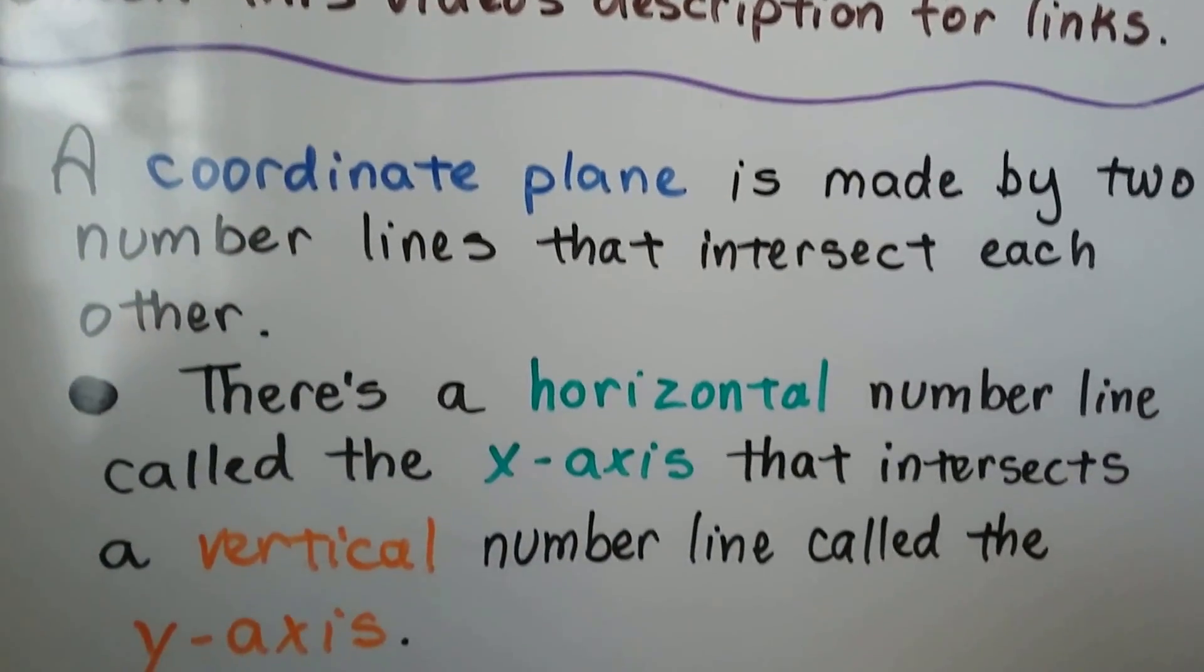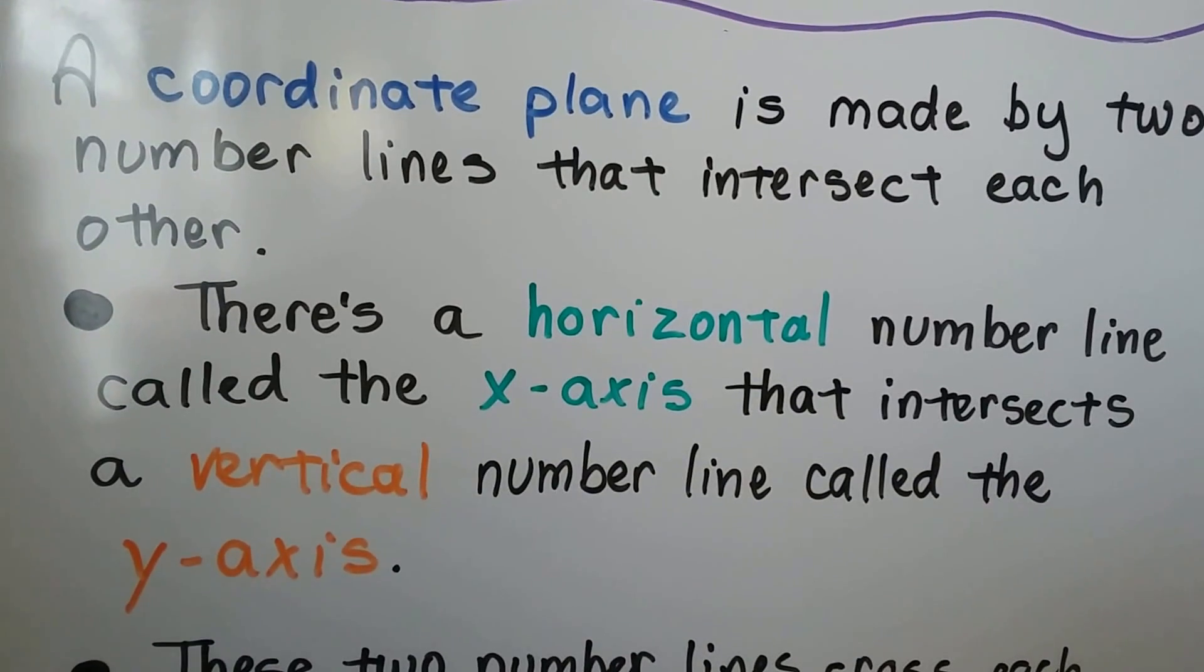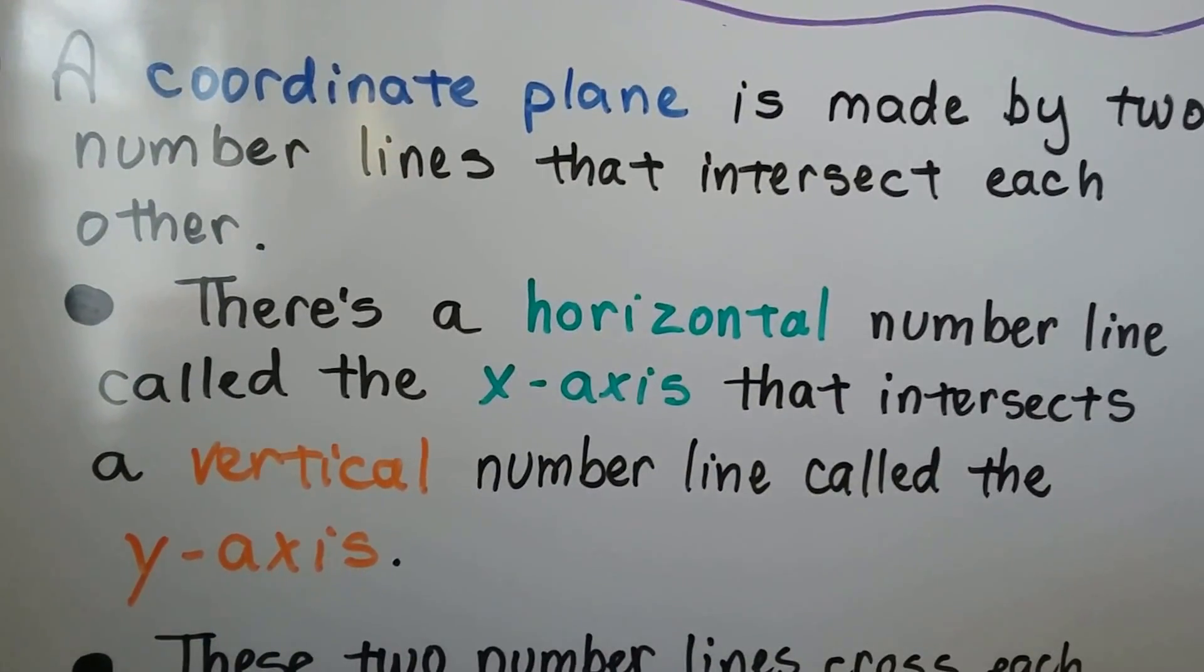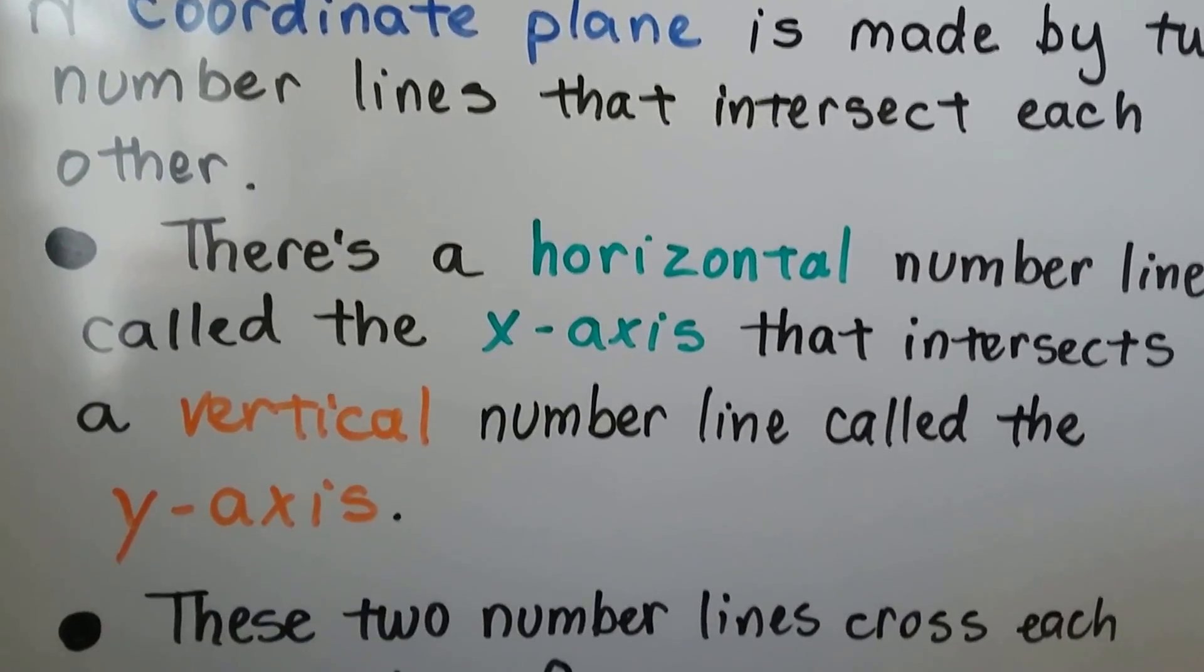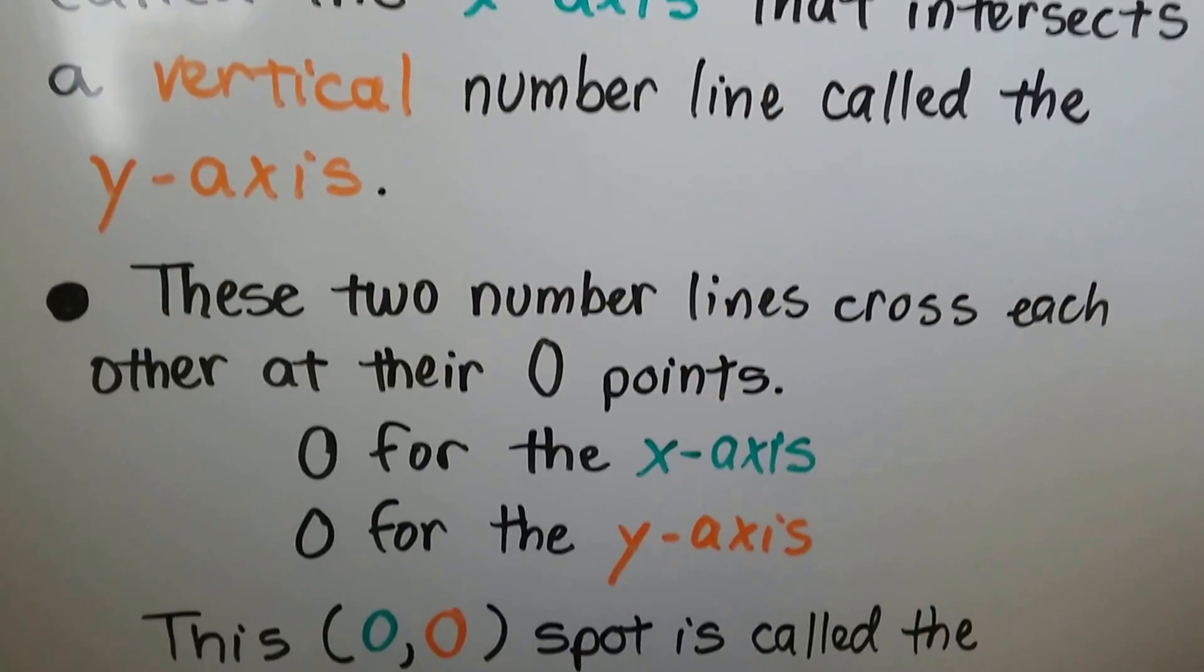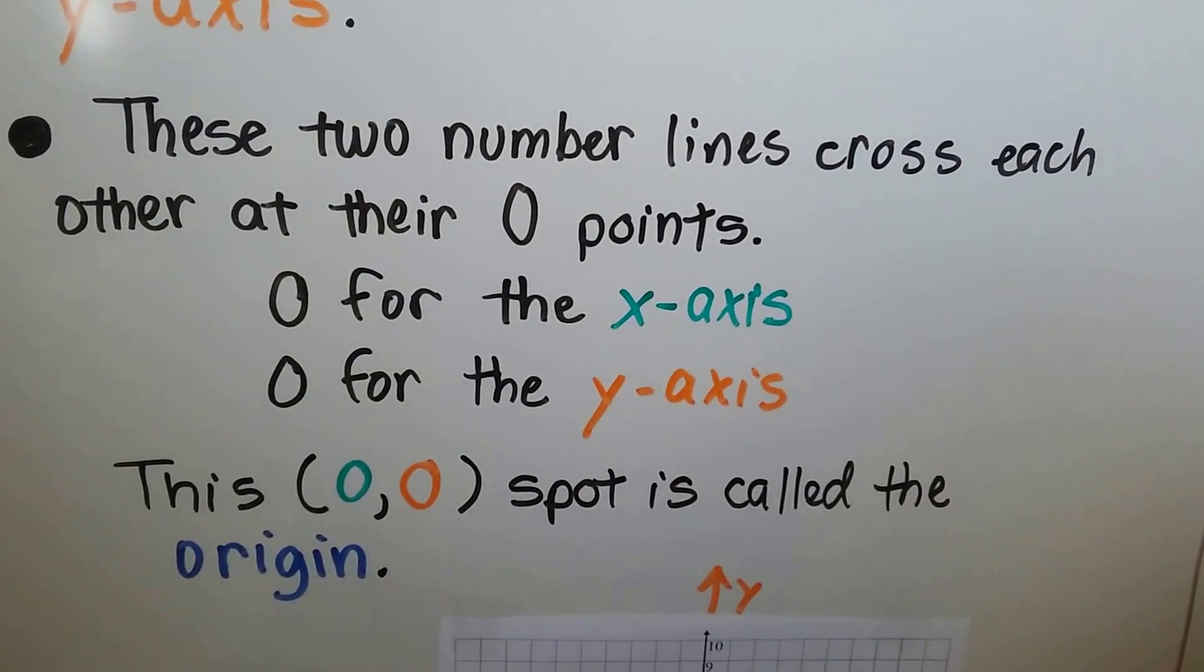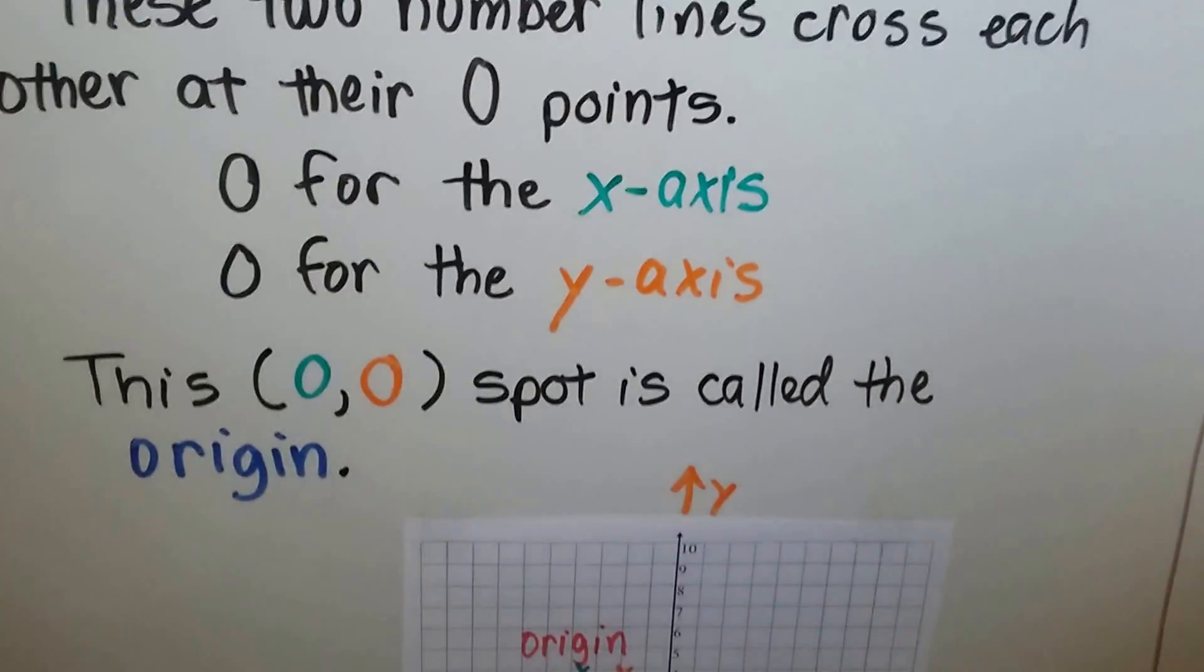A coordinate plane is made by two number lines that intersect each other. There's a horizontal number line called the x-axis that intersects a vertical number line called the y-axis. They make like a plus sign. And these two number lines cross each other at their zero points, zero for the x-axis and zero for the y-axis. And this zero-zero spot is called the origin.